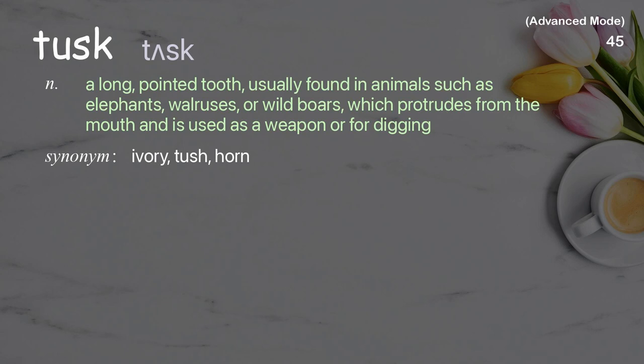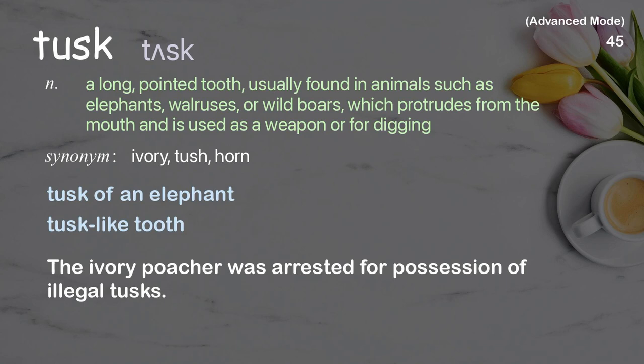Tusk: A long, pointed tooth, usually found in animals such as elephants, walruses, or wild boars, which protrudes from the mouth and is used as a weapon or for digging.